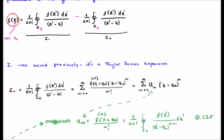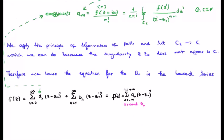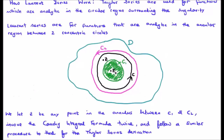So we have f(z) — not f(z_0) — just like we did with the Taylor series. Now we're going to subtract from the integral involving contour 2 the integral involving contour 1, noting the indices carefully. Integral 1 has been solved previously — that's simply a Taylor series expansion and we know the coefficients. They're given by the generalized Cauchy integral formula. We apply the principle of deformation of path and let c2 go to c, which we can do because the singularity at z_0 does not appear in c. Therefore we have an equation for a_n in the Laurent series.